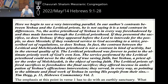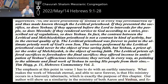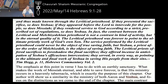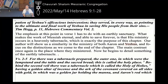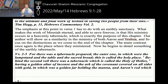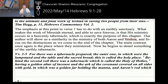Moses — when he was on the mount, if he saw any kind of physical manifestation of God, he saw Yeshua. He came down with his face aglow. They believed in the one who was coming; we look back to the one who came. They looked forward to the one who was coming. The emphasis at this point in verse one has to do with an earthly sanctuary. What makes the work of Messiah eternal and able to save forever is that his ministry occurs in a heavenly tabernacle — that's the exact purpose of this chapter. The author will show us the similarity in the ministry of both Aaron and Yeshua, then focus on the distinctions at the end of the chapter. The main contrast is where they minister, not how they minister.